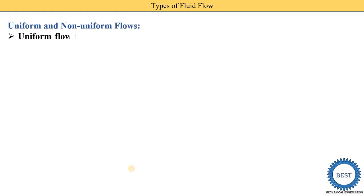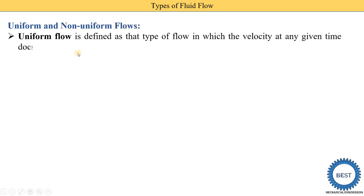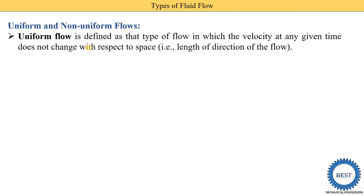The second classification is uniform and non-uniform flow. Uniform flow is defined as that type of flow in which the velocity at any given time does not change with respect to space. Space means the length in the direction of flow.